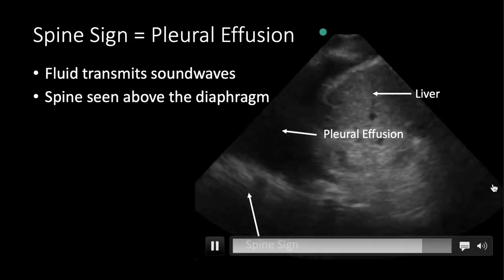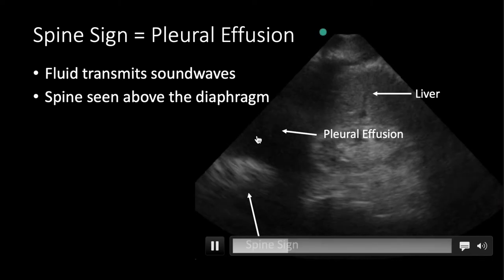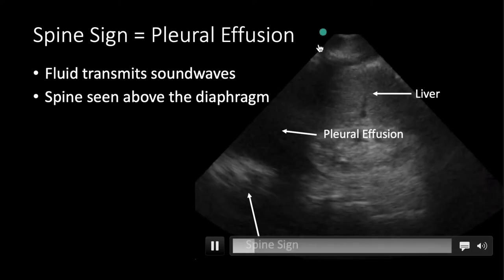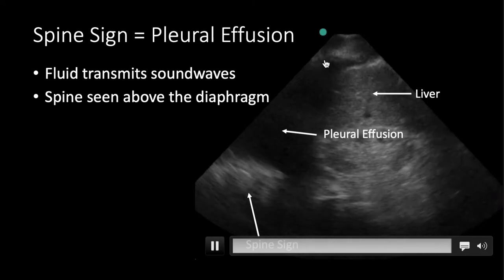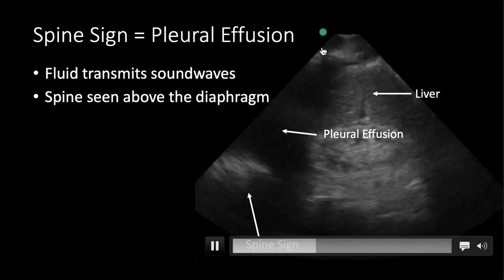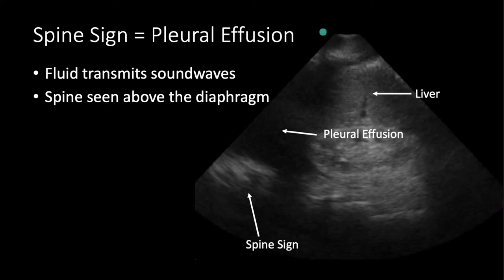Now let's compare to this case. We've identified our liver, diaphragm, and spine. Again the lung here is anechoic, but we see the spine continue above the diaphragm. We must have some fluid here that's transmitting sound waves better than air — those waves hit the spine and travel back through the liquid to the probe. This is known as the spine sign and is indicative of a pleural effusion.